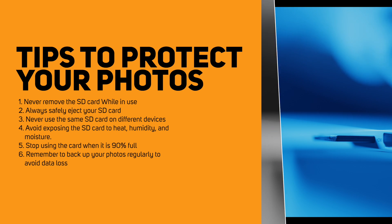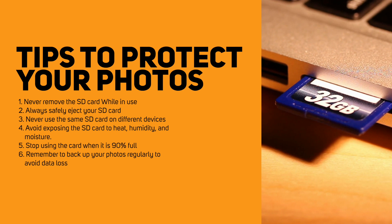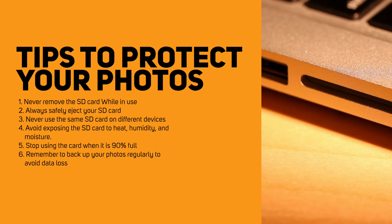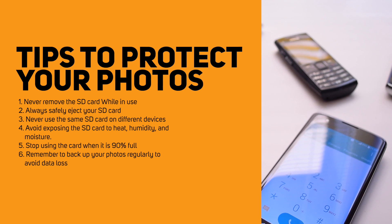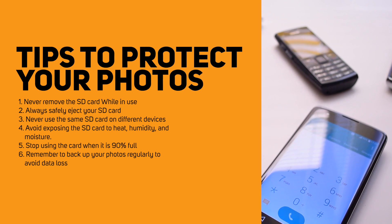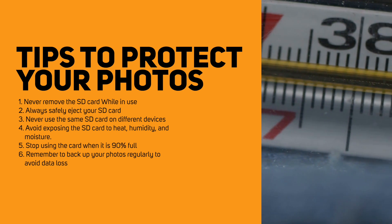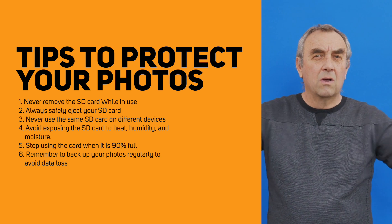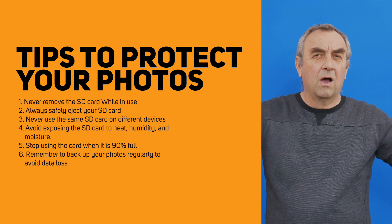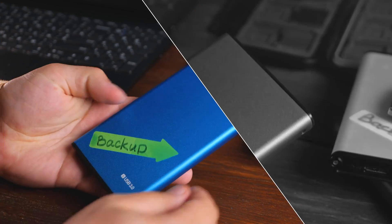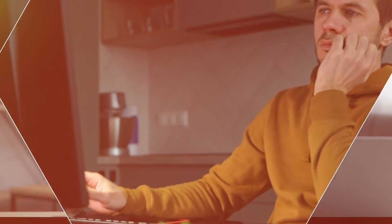Number one: never remove the SD card from the device while it is still in use. Second: always safely eject your SD card from the computer or smartphone to prevent corruption. Third: never use the same SD card on different devices. Fourth: avoid exposing the SD card to heat, humidity, and moisture. Fifth: stop using the card when it is 90% full. Number six: remember to back up your photos regularly to avoid data loss.